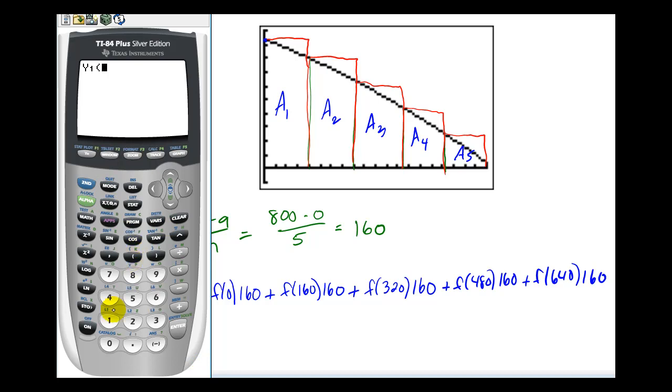So y1 of zero times 160 gives us 7520 for the area of this first rectangle.